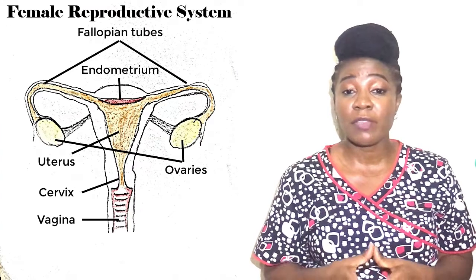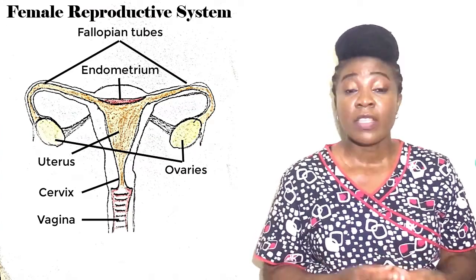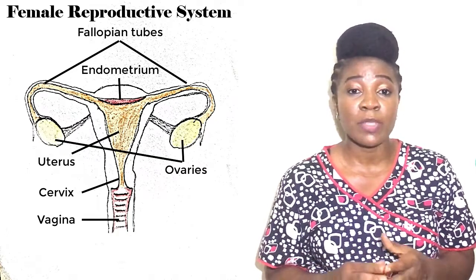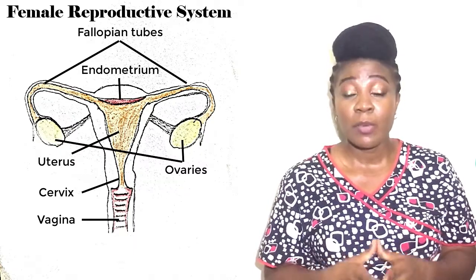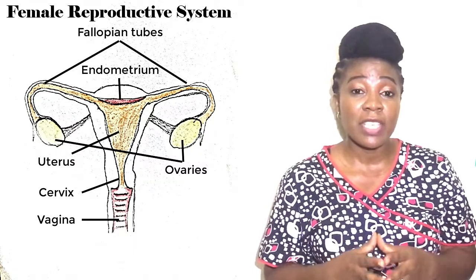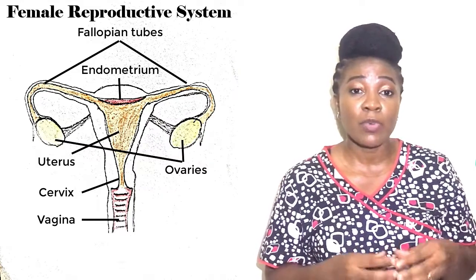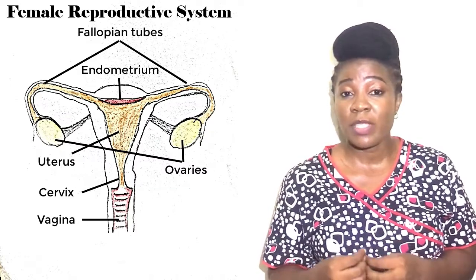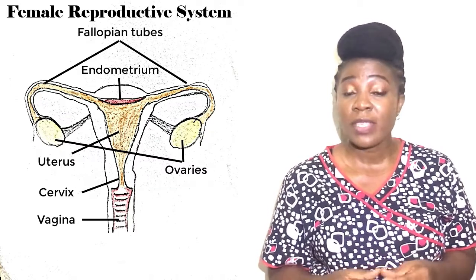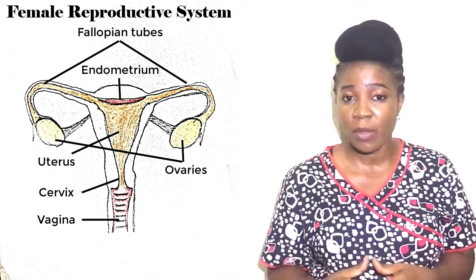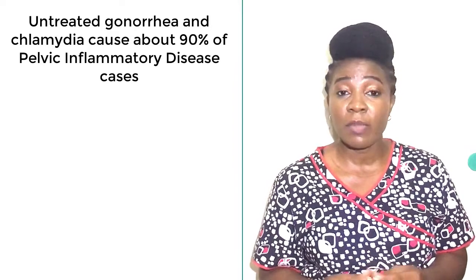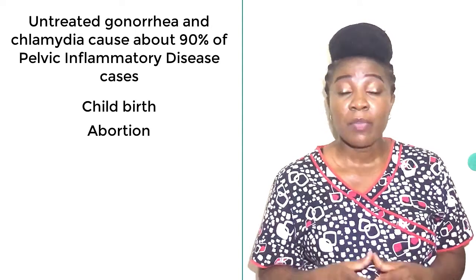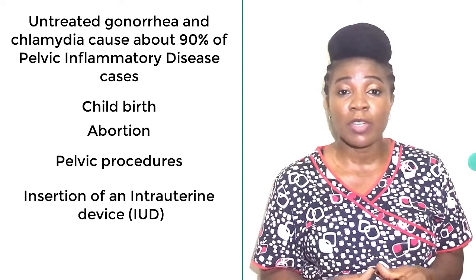Bacteria entering the reproductive tract often cause pelvic inflammatory disease. These bacteria are passed from the vagina through the cervix into the uterus, fallopian tubes, ovaries, and into the pelvis. Normally the cervix keeps bacteria from spreading deeper, but when infected by a sexually transmitted disease like chlamydia or gonorrhea, it becomes less able to keep bacteria out. Untreated gonorrhea and chlamydia cause about 90% of PID cases. Other causes include childbirth, abortion, pelvic procedures, and insertion of an intrauterine device or IUD.